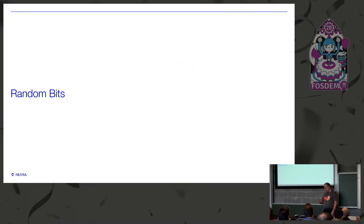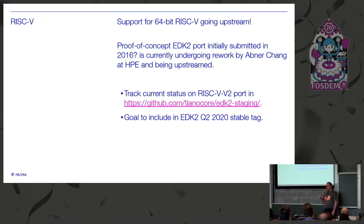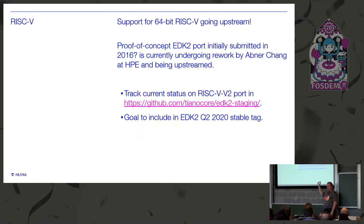Some completely random unrelated slides before I hand over to Ard. RISC-V — the support for 64-bit RISC-V is going upstream in EDK2. A proof of concept port was initially submitted in 2016, but that was then kind of left alone until summer last year. Now we've been going through and reworking it. I've been reviewing it with Abner Chang at HPE, reworking it and upstreaming it, and working also with OpenSBI to make that easier to plug into the EDK2 port. You can track the current status of the RISC-V port at that link.